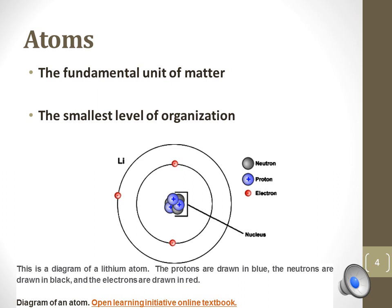Protons are positively charged, and electrons are the opposite of protons and negatively charged. Neutrons are said to be neutral because they have no charge.